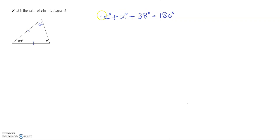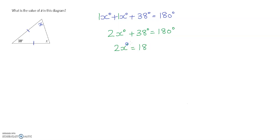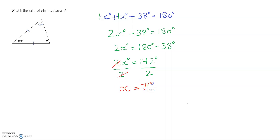Collecting like terms: the two equal angles are both x, so 1x plus 1x gives 2x. The equation becomes 2x plus 38 degrees equals 180. Taking 38 to the right side gives 2x equals 142 degrees. Dividing both sides by 2, we get x equals 71 degrees.